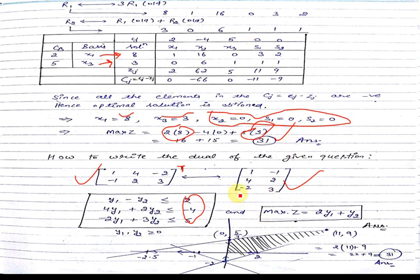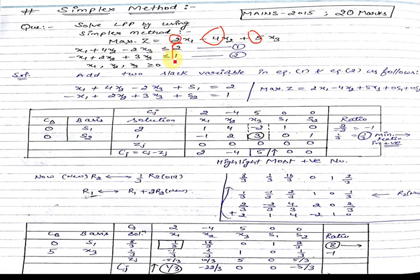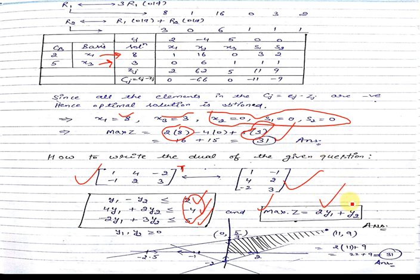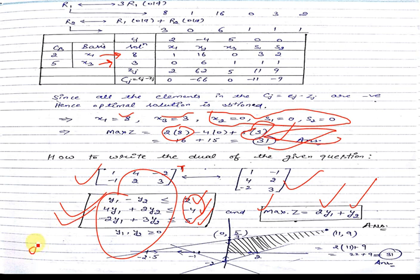The objective function coefficients 2, -4, 5 become the right-hand side of the dual constraints, and the original RHS values 2 and 1 form the dual objective: minimize W = 2y1 + y2. When solved graphically, the intersection point is (11, 9), and substituting gives the same optimal value of 31, confirming our simplex solution.